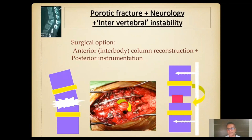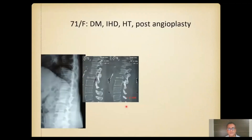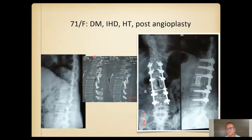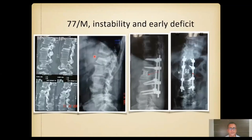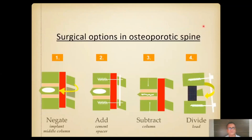In case examples, a patient with a breached end plate required takedown of a significant portion of the end plate and disc, with anterior column reconstruction using a mesh cage. A second similar case also required anterior column reconstruction with a mesh cage inserted posteriorly.